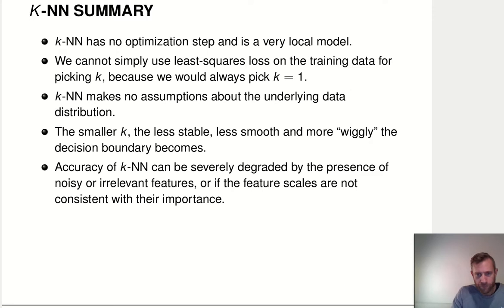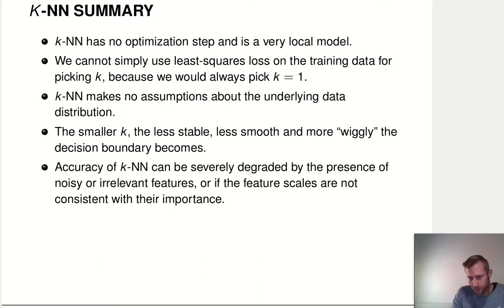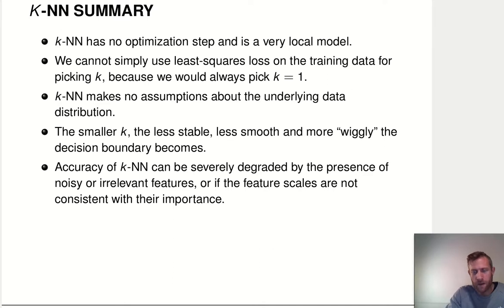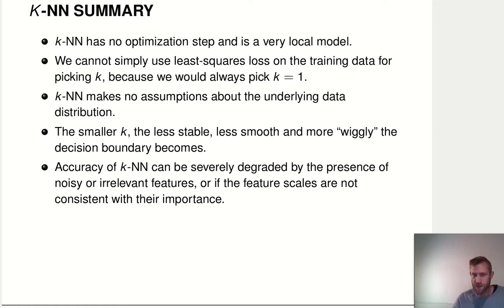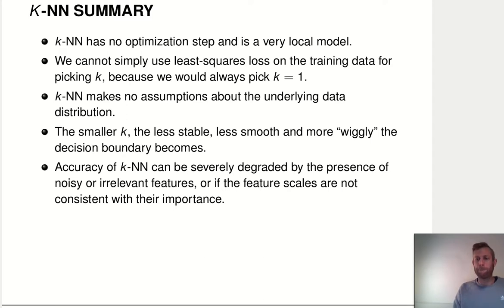As we make K smaller, the method becomes less stable — small changes in x will change which neighborhood is relevant, affecting the prediction. If we make the neighborhood larger, we have to move much farther in the feature space to really change the prediction, because the larger set of neighbors is more stable. KNN doesn't deal well with the presence of many features that don't actually matter for predictions, since they still play a role in the distance calculation. Also, KNN is very sensitive to different scales of the features in terms of distance calculation.